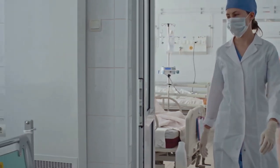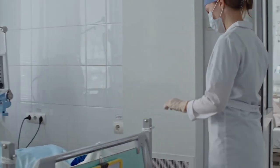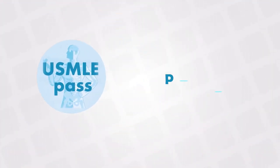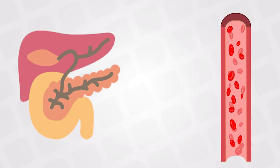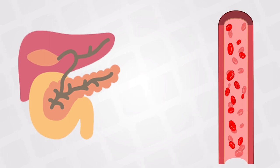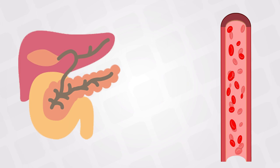Welcome back. In this video we'll talk about a very important topic for the USMLE and all medical exams: the portosystemic shunts. It is very unlikely that you will have an exam without at least a mention of these shunts. There are seven areas where the systemic circulation and the portal circulation connect. These areas are very high yield for diseases like varices.